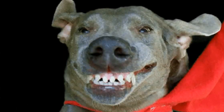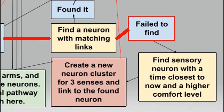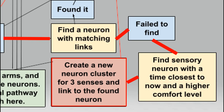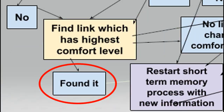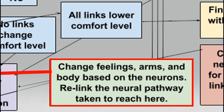However, if this was the AI's first time and it failed to find another similar situation, then it will attempt to retrace its steps by finding the latest high-comfort neuron cluster. The AI links this cluster to the current one, then restarts the thought process. Once the AI finally finds a neuron pathway that leads to high comfort, it will change its feelings, arm, or body movement to match the neuron information.